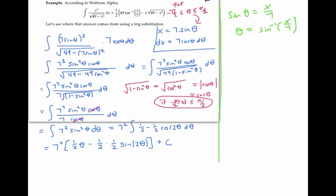So I could just plug in for theta here and get seven squared, that's 49, times one half sine inverse x over seven, minus one half times one half is one fourth, sine of two times sine inverse x over seven, plus c. This is a correct answer.